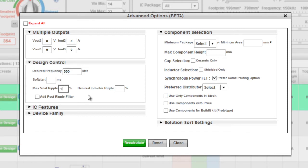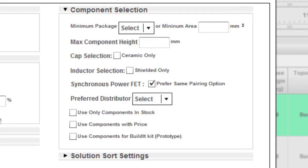And to help ensure your design meets manufacturing requirements, the Advanced Visualizer lets you set component specifications, such as maximum component height, ceramic capacitors, shielded inductors, and you can even specify a preferred distributor.